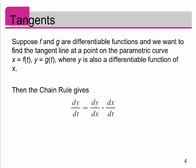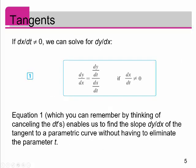Suppose f and g are differentiable functions and we want to find the tangent line at a point on a parametric curve, where x is some function of t and y is also some function of t, and where y is also a differentiable function of x. Then using the chain rule, dy/dt equals dy/dx times dx/dt. Solving for dy/dx, as long as dx/dt does not equal zero, dy/dx equals dy/dt divided by dx/dt.